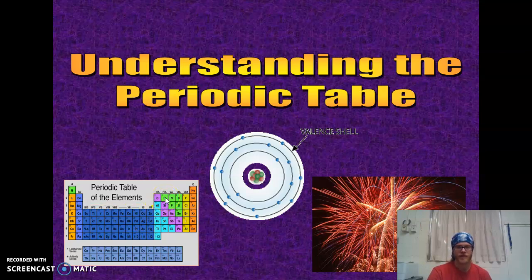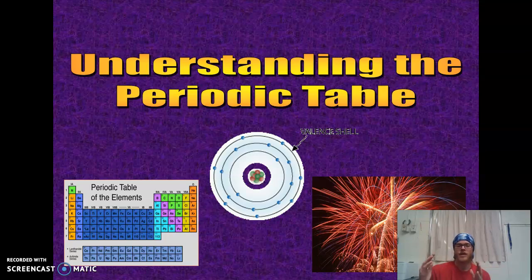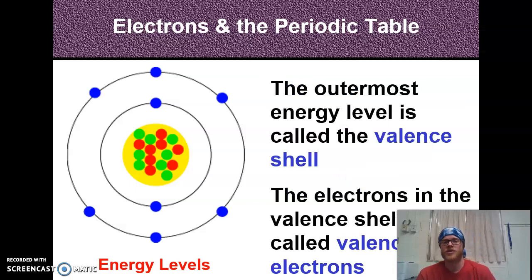Let's look at carbon. It's in column 1-2-3-4, so it should have four valence electrons. Its atomic number is 6, so it has six protons and six electrons. It's in row 2, so it has two shells. The first shell holds two electrons, and carbon has six total, so four are left for the second shell — four valence electrons. This is kind of like a grid, similar to the game Battleship. The periodic table is organized with purpose.